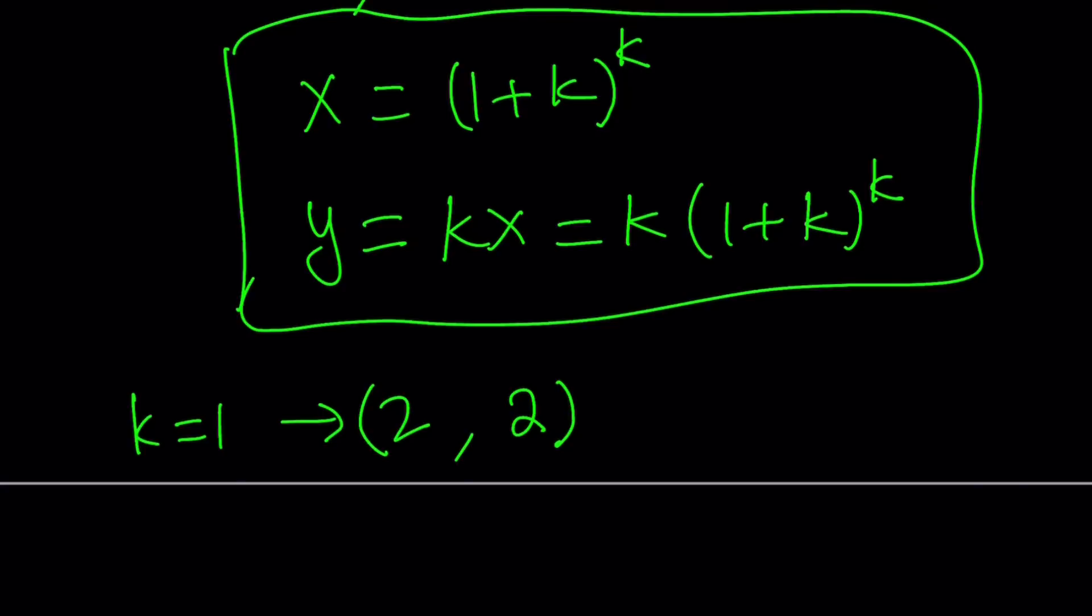The only value that is not allowed is k equals zero, or is it allowed? Let's take a look. If k is zero we're going to get one to the power of zero which is one. So x is going to be one and y is going to be zero times x which is zero. Let's check maybe it's going to work.